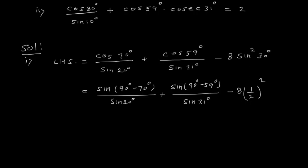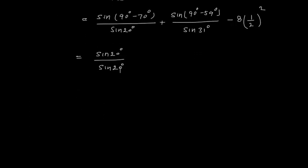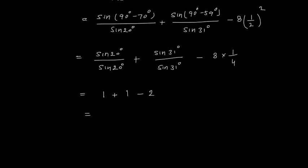Now sin(90° − 70°) = sin20°, so this becomes sin20°/sin20° + sin(90° − 59°) = sin31°, so sin31°/sin31° − 8 × (1/4). sin20°/sin20° = 1, sin31°/sin31° = 1, and 8/4 = 2.